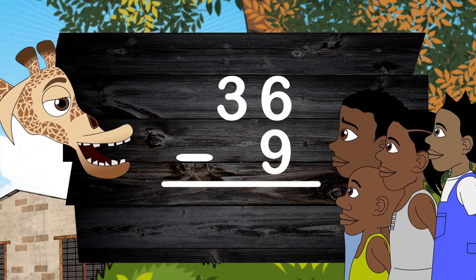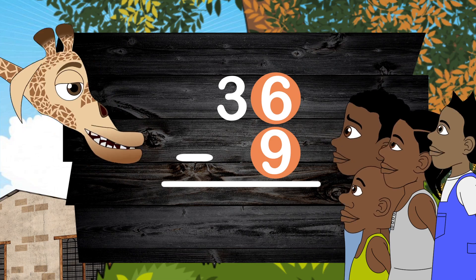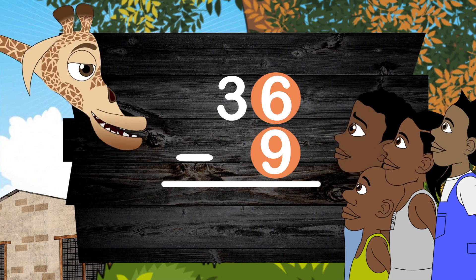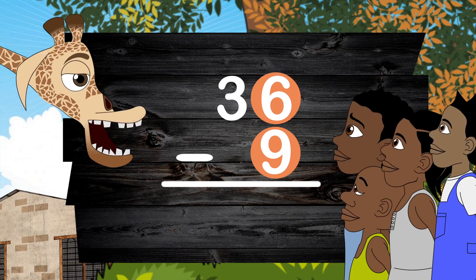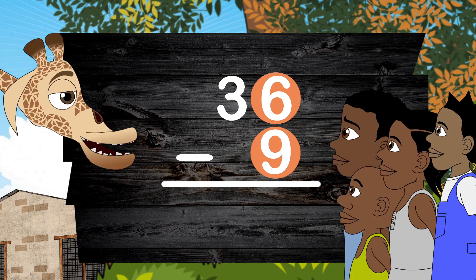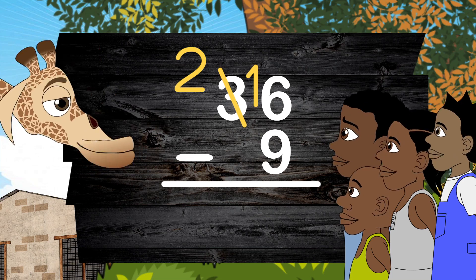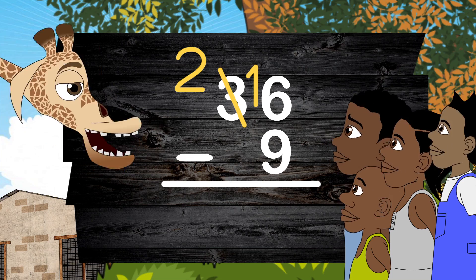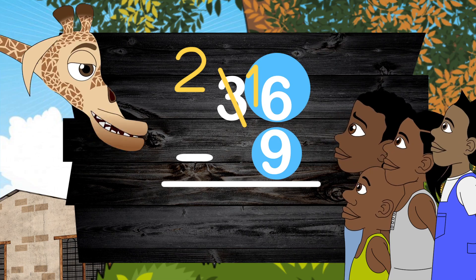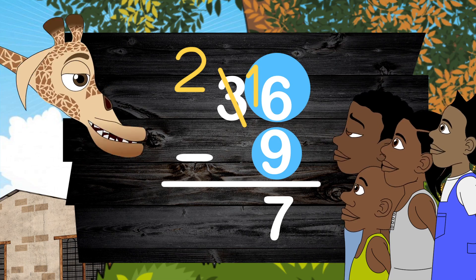Let's follow this rule. Can we subtract 9 from 6? No, we can't. So what should we do now? Let's remember the place value of 10's. I can take one 10 from there and bring it here to the 1's with the 6 ones. Now we have 16 ones. So 16 subtract 9 — now we can do it. Now we have 7 ones.